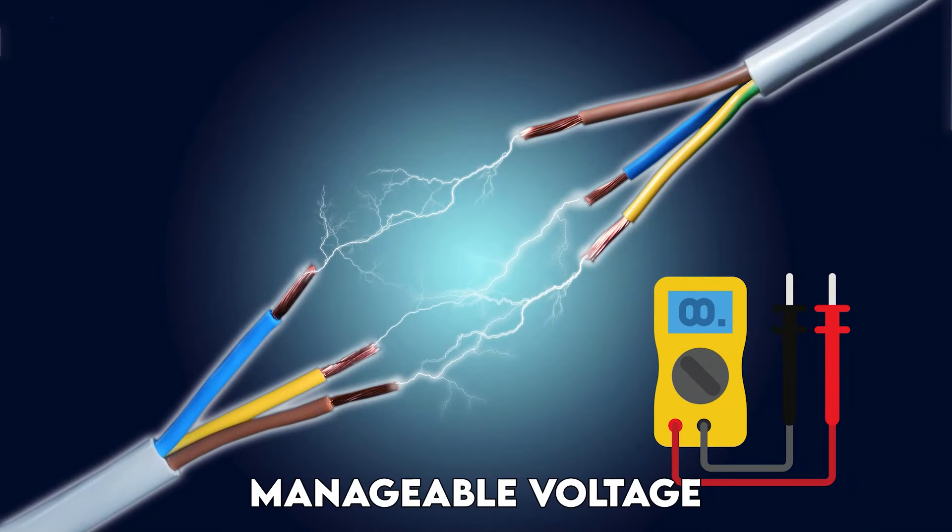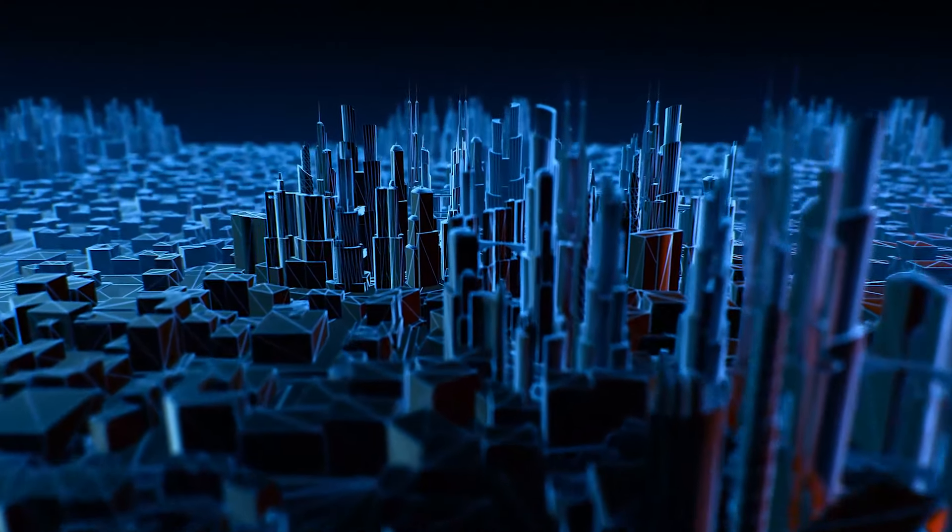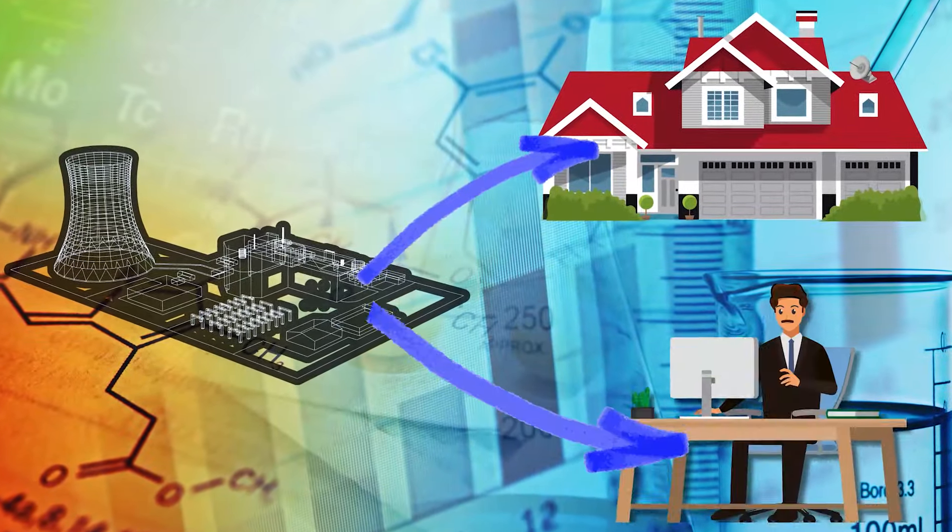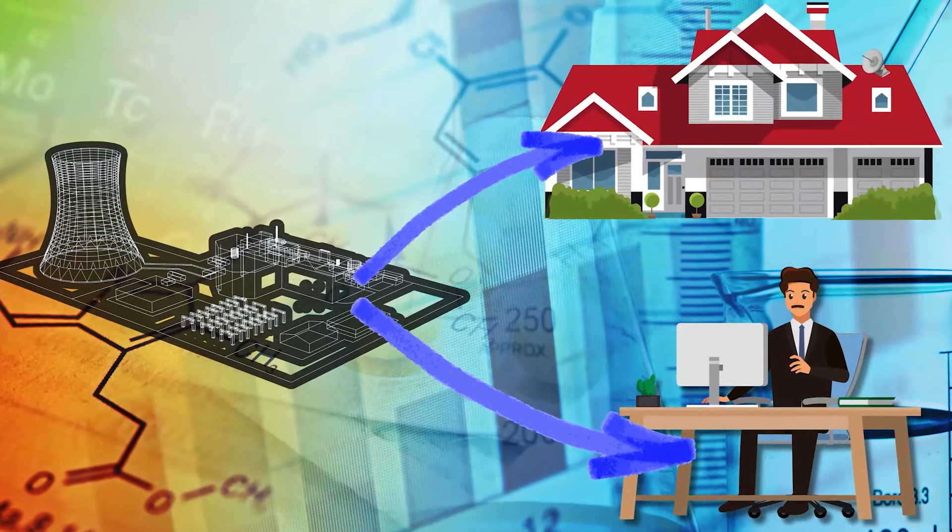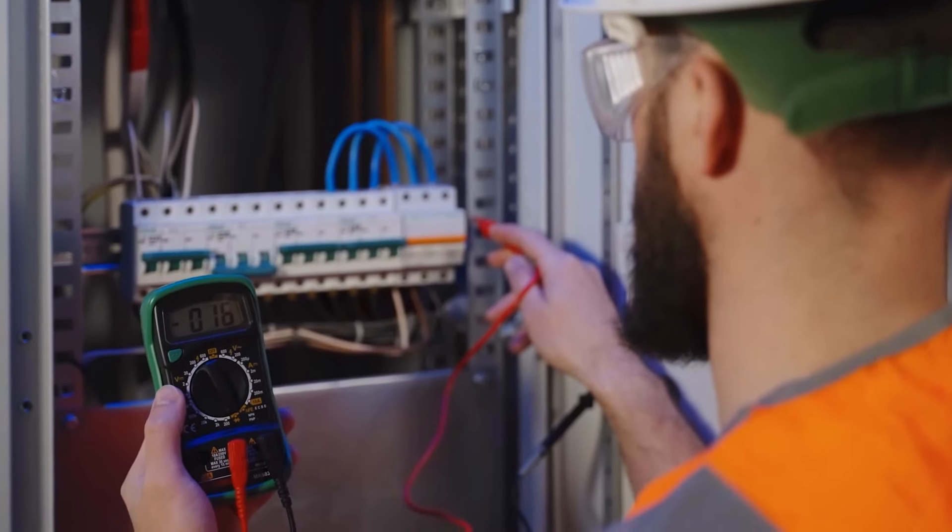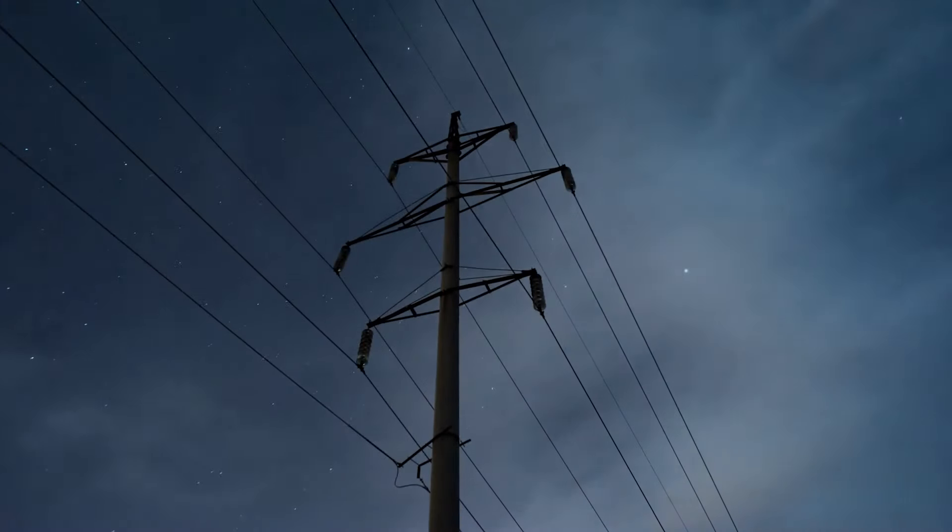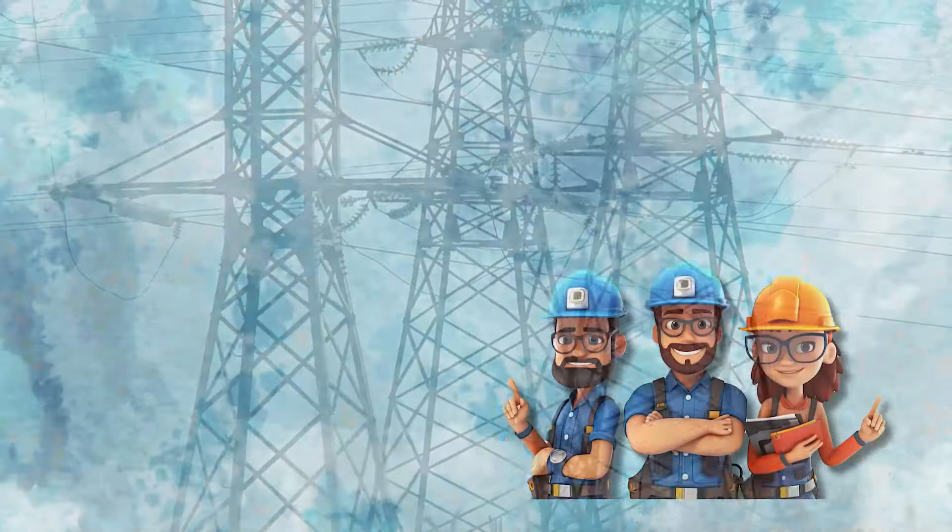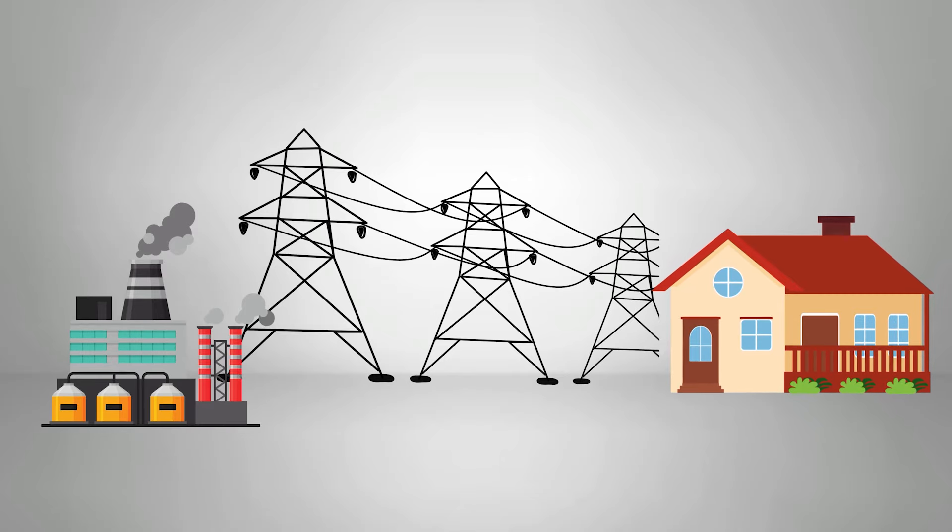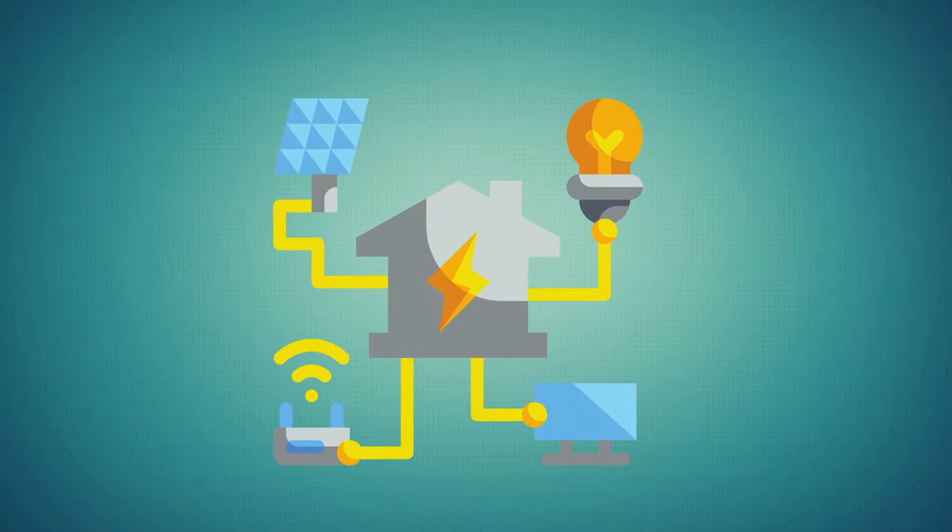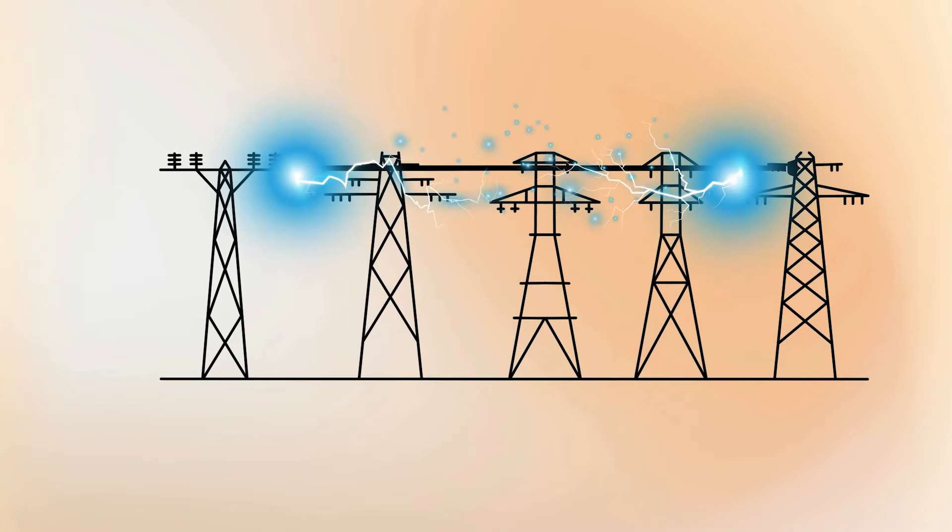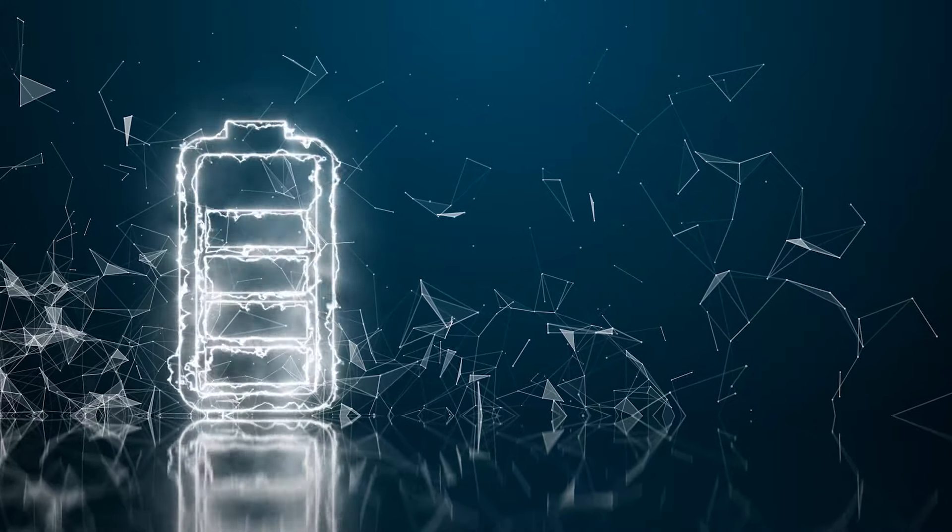With electricity now at a manageable voltage it's ready to embark on the next step of its journey. But how does it traverse the vast distances from power plants to our homes and businesses? This is where the concept of high voltage superhighways takes center stage. These superhighways, or high voltage transmission lines, are a marvel of engineering designed to transport electricity efficiently over long distances. Electricity doesn't flow effortlessly. Instead it travels through specially designed high voltage power lines that act as the backbone of our energy infrastructure.